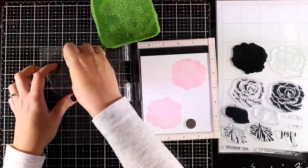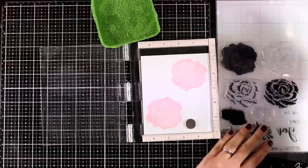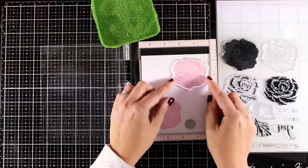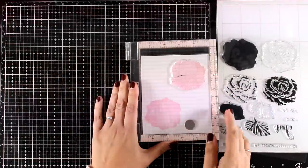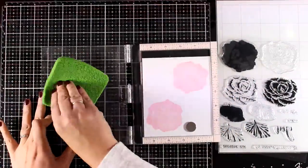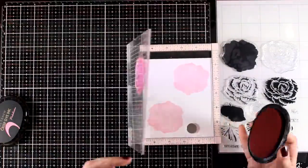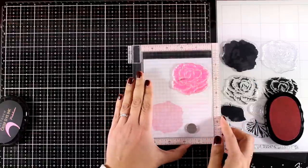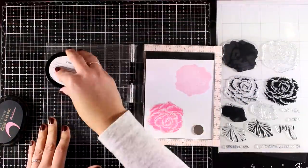Now I'm going to lay on top the next layer. It's really easy to align. I'm going to close the door of my MISTI and then stamp this time with Pinkalicious. This is a shade darker than the previous color and it's going to give all those petals and the shadows that we need. I'm going to turn the page and stamp one more time. Then I'm going to clean up my stamp and align the third layer.